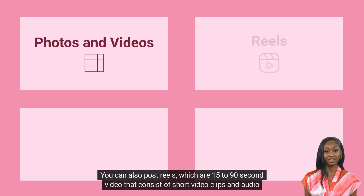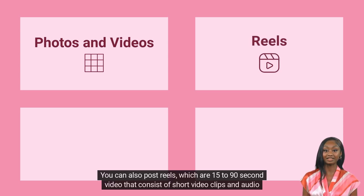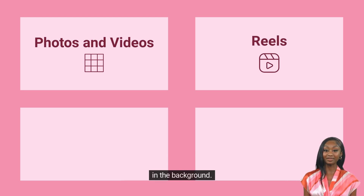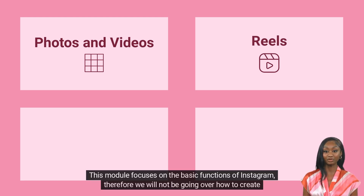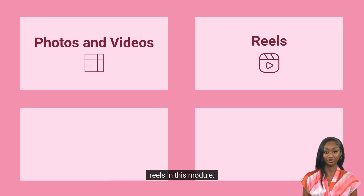You can also post reels, which are 15 to 90 second videos that consist of short video clips and audio in the background. This module focuses on the basic functions of Instagram, therefore we will not be going over how to create reels in this module.